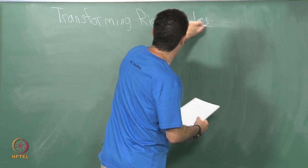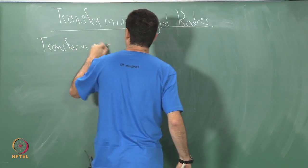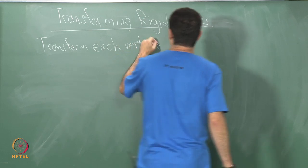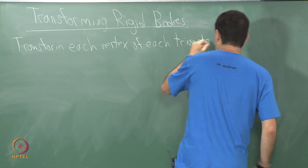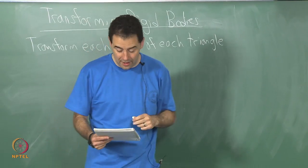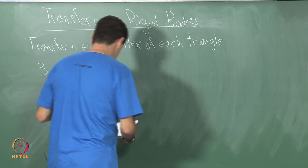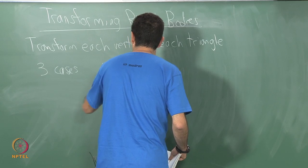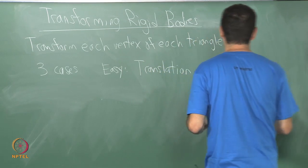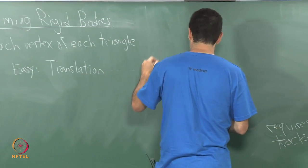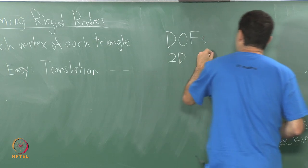Under transforming rigid bodies, let us imagine transforming each vertex of each triangle, simple as that. There are going to be three cases that I cover today. We have the easy case, which is translation, and in that case I am going to go over and I am going to talk about the number of degrees of freedom, the DOFs in 2D and 3D.